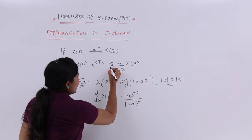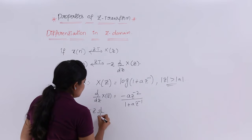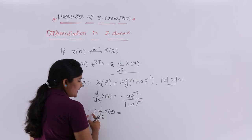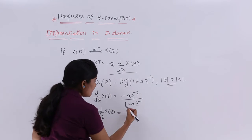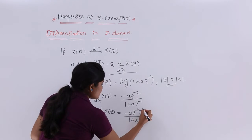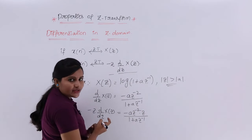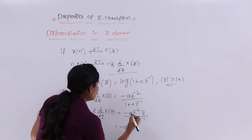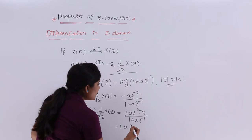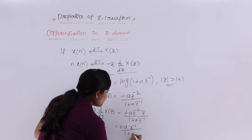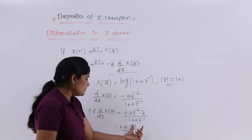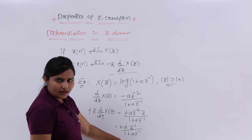Now I compute minus Z times d/dZ of X(Z), doing this step by step. Multiplying the differentiation result by minus Z: the minus signs cancel, Z⁻² times Z gives Z⁻¹, so minus Z · d/dZ · X(Z) = AZ⁻¹/(1 + AZ⁻¹). This is what I have in hand.